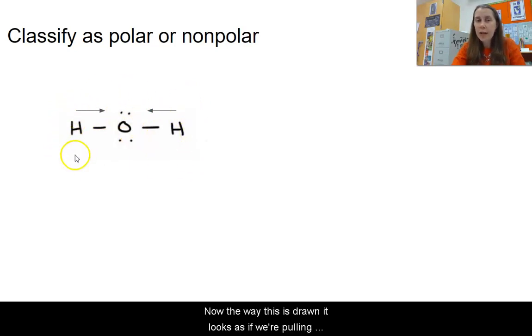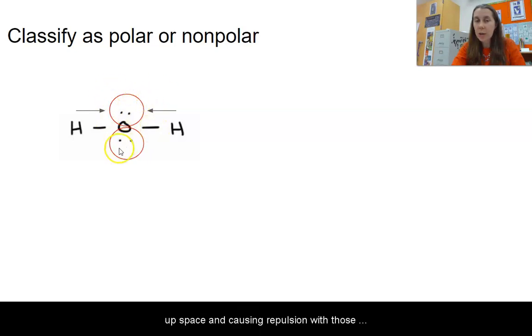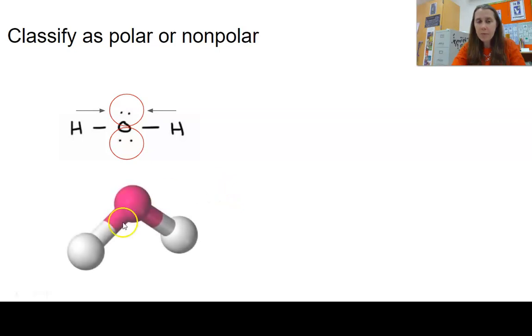Now the way this is drawn, it looks as if we're pulling evenly from both sides. But if you remember, part of the reason we spent so much time looking at molecule shapes is because the Lewis structures only give us a two-dimensional view. So we have these two lone pairs of electrons, which are negative charge that are taking up space and causing repulsion with those oxygen-hydrogen bonds. So this molecule, even though it looks linear the way it's drawn, is actually bent like this.